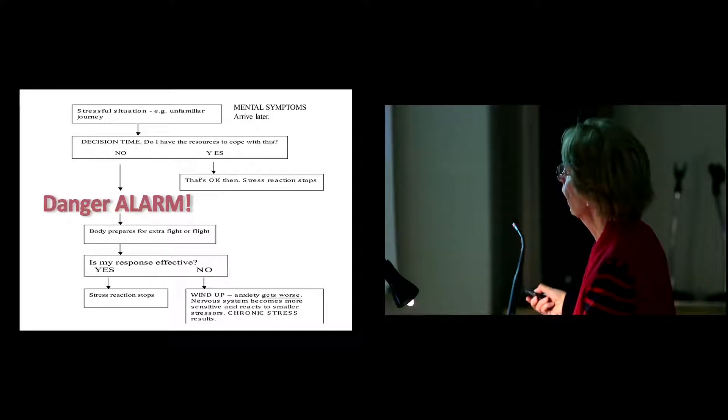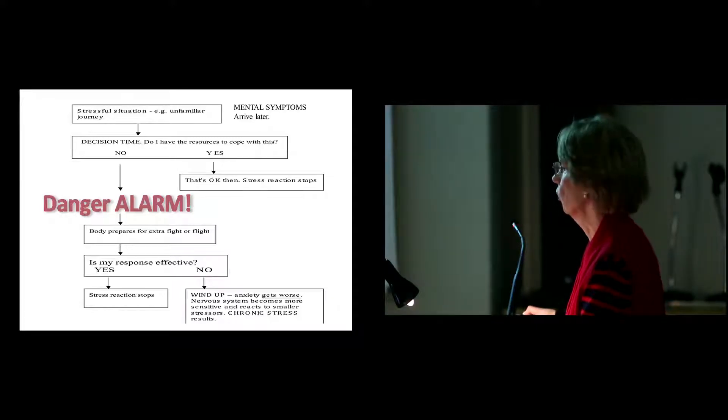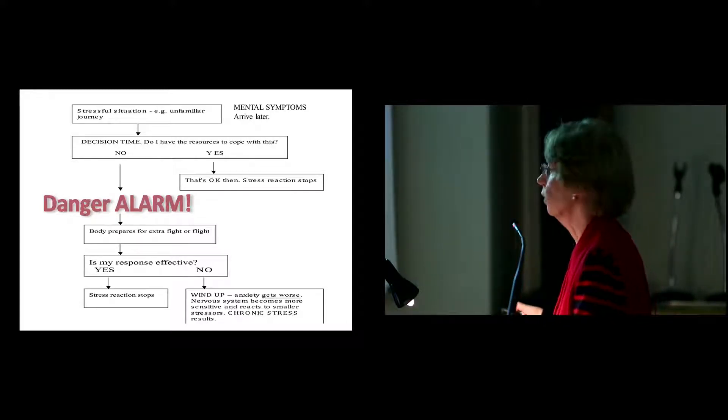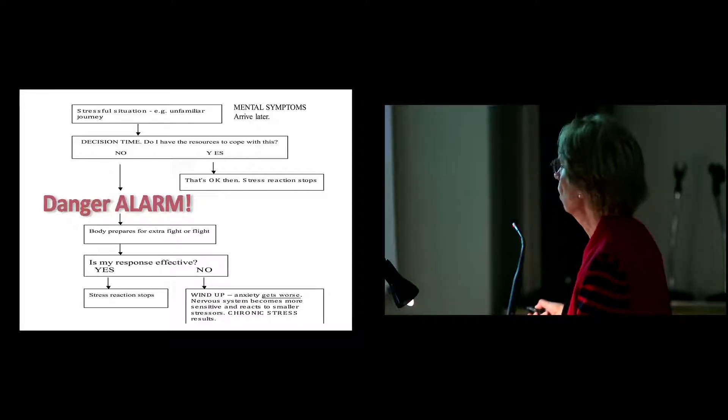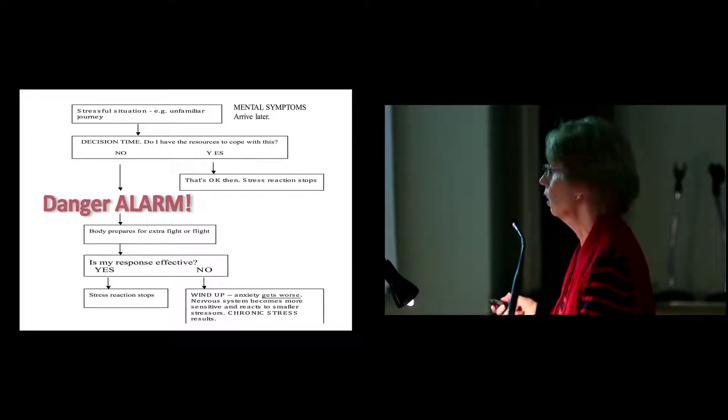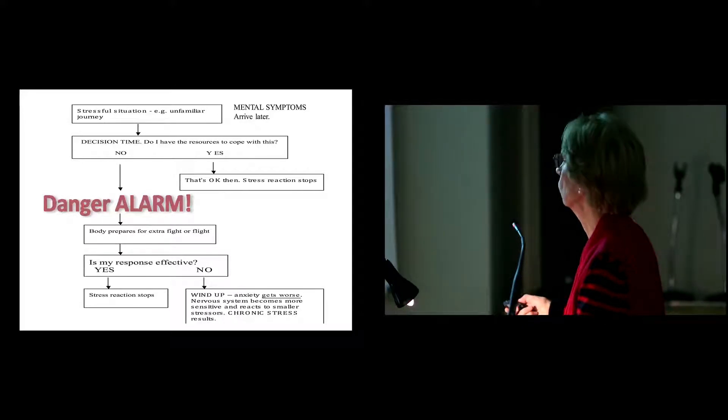Here you have decision time. When you've got your adrenaline surge, do I have the resources to cope with this? Yes, that's OK then. My limbic system is telling me I'm familiar with this situation, so my stress reaction can stop. But if it's telling me, no, I'm not familiar, then I get this alarm response. I make another decision a bit later on, is my response effective? And if yes, OK, I can now relax and the stress response stops and my parasympathetic nervous system takes over. But if the answer is no, my response hasn't been effective, then you would get into a state of chronic anxiety where the nervous system becomes more sensitive and more easily triggered.